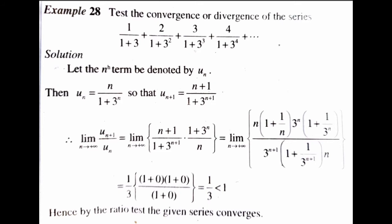The n's cancel. Applying the limit as n tends to infinity, it becomes (1/3) × (1+0)(1+0)/(1+0), which equals 1/3. Since 1/3 is less than 1, by the ratio test the given series converges.